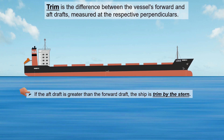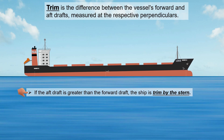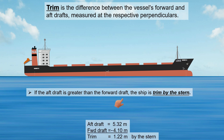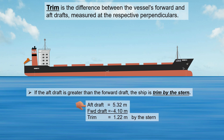If the aft draft is greater than the forward draft, the ship is trimmed by the stern. In this example, the aft draft is 5.32 meters and the forward draft is 4.10 meters. The trim is 1.22 meters by the stern.